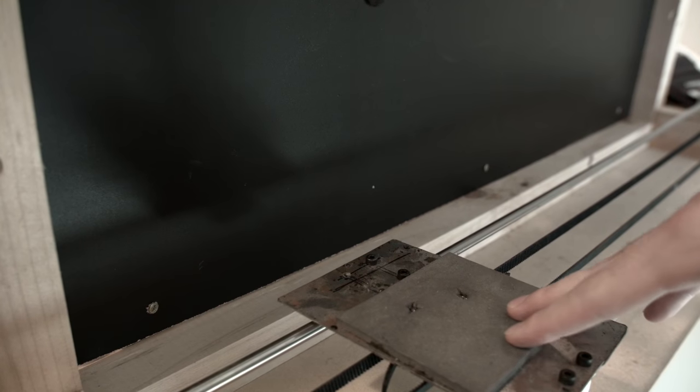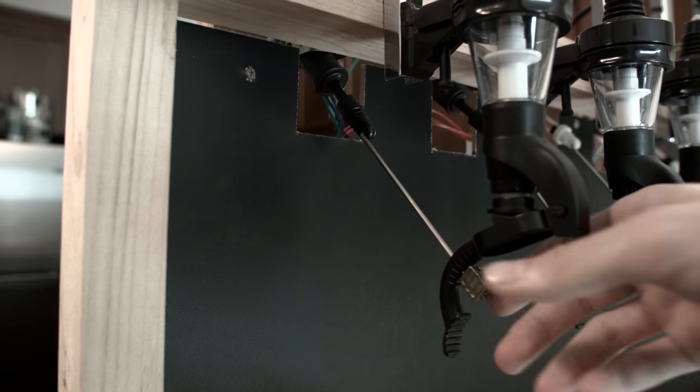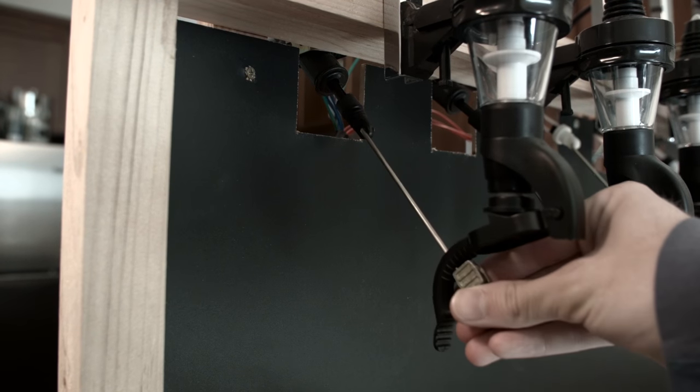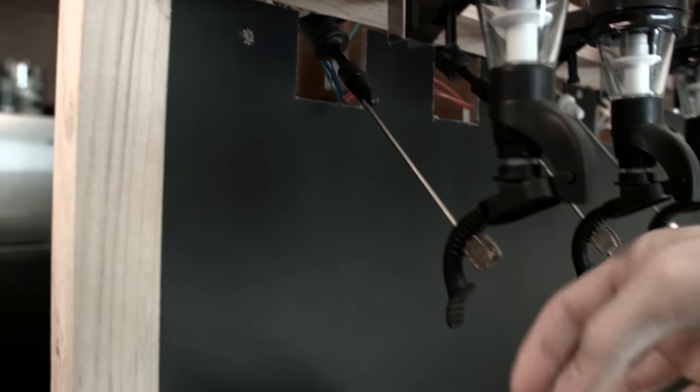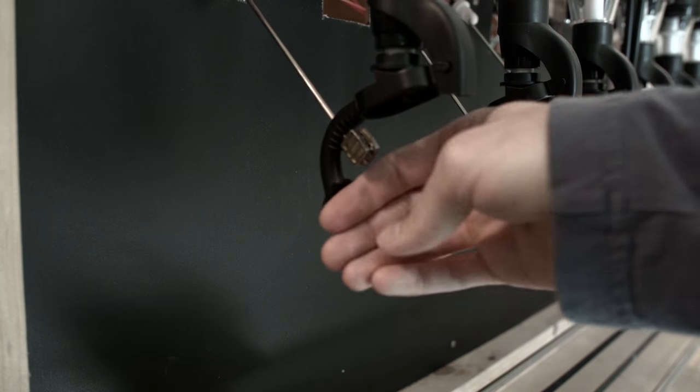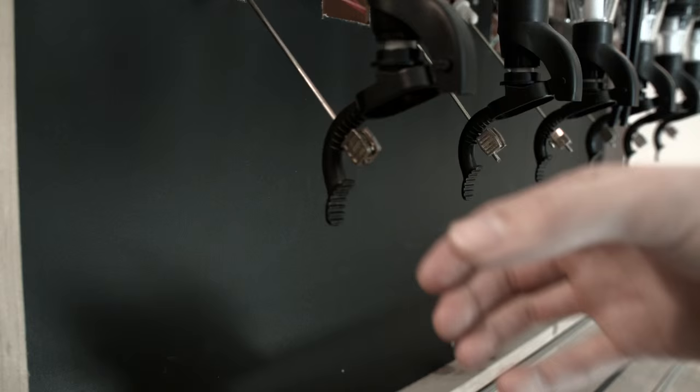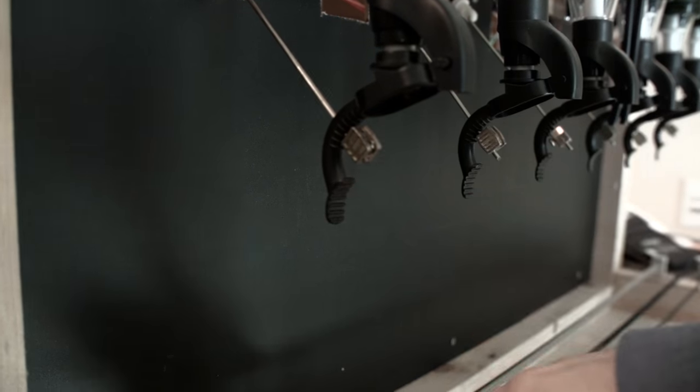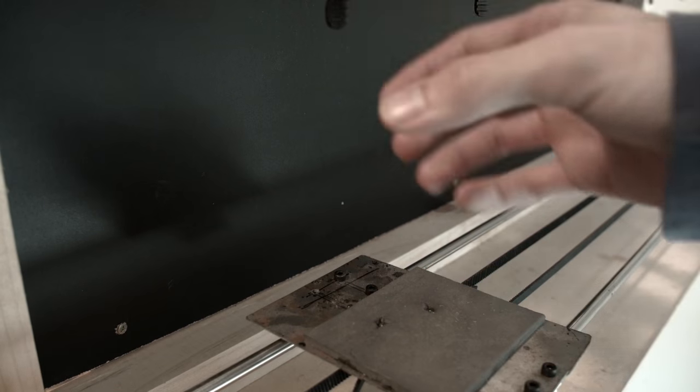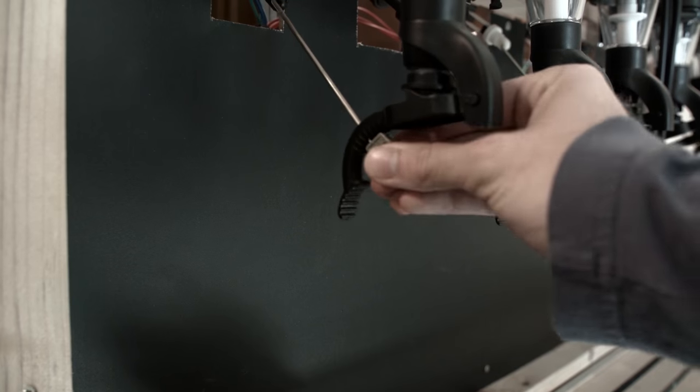Once it moves underneath this thing, there's a linear actuator that pulls this lever back. So how this is supposed to work normally is you push a glass against this and the alcohol falls in, but because we can't really push the glass up into this thing, I just have an actuator that pulls it back.